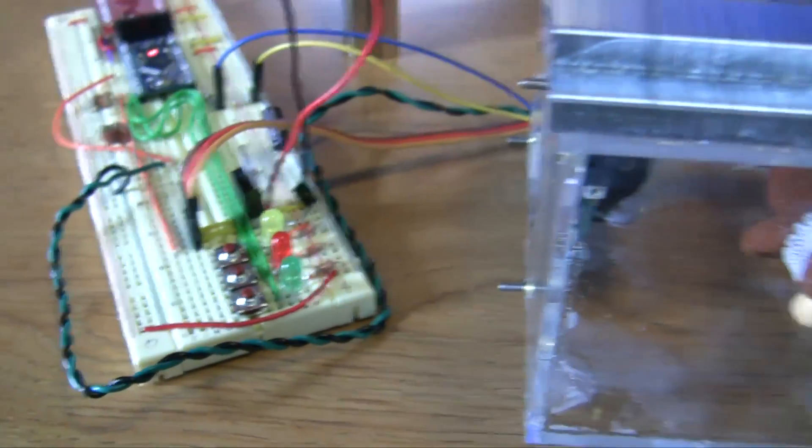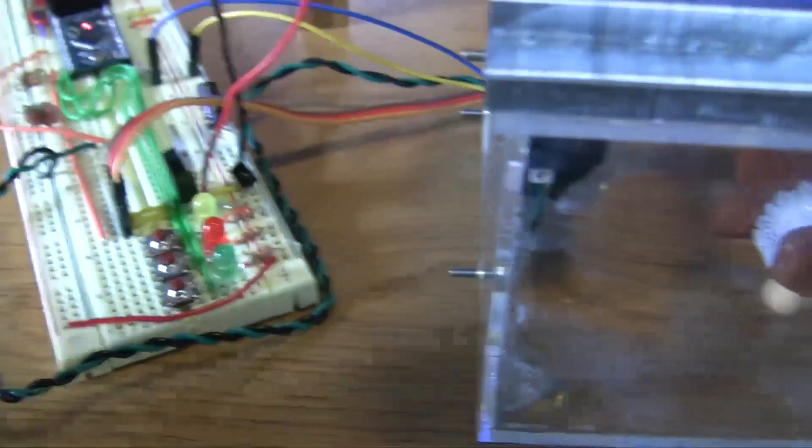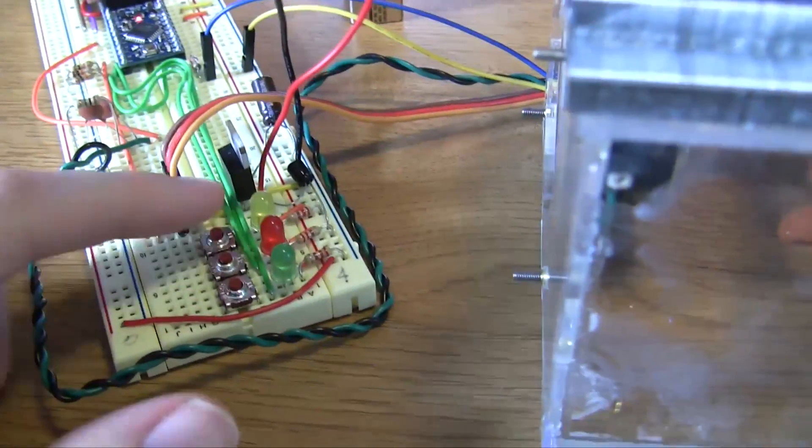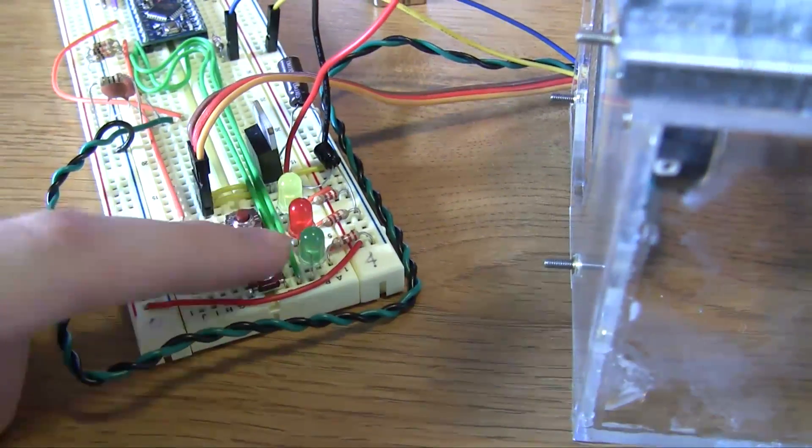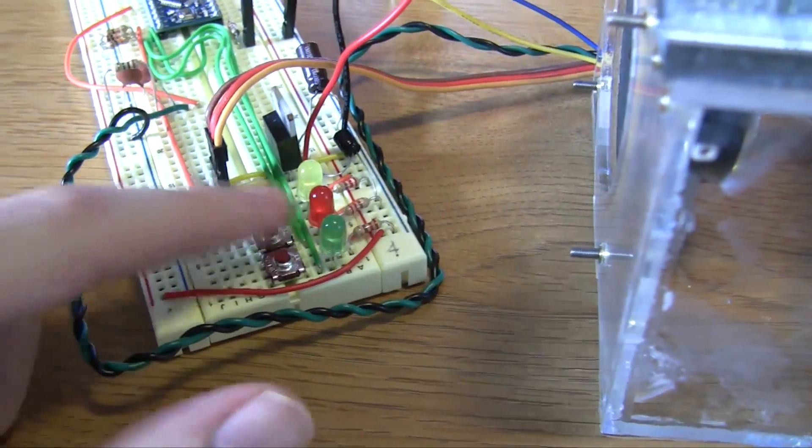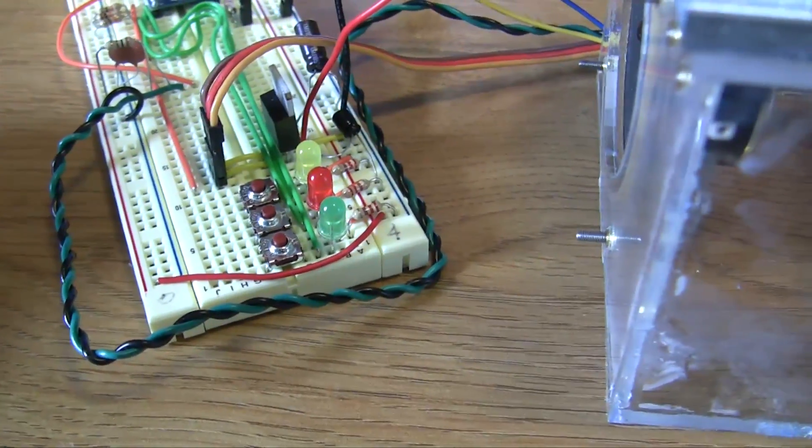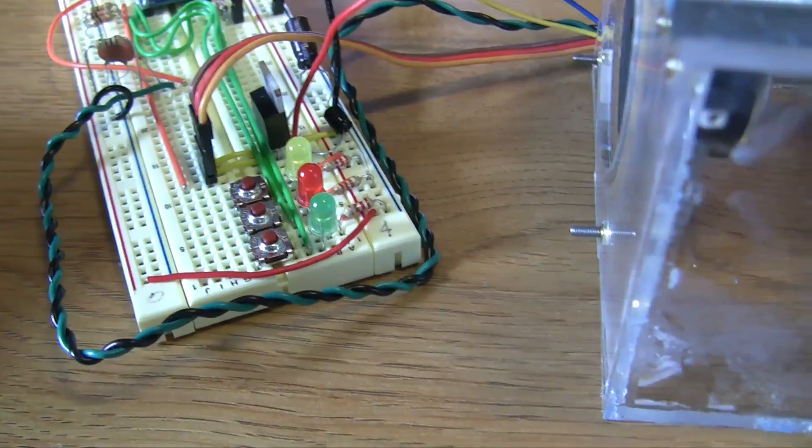All right, so I'll show you how the box works. Basically the way it's set up is you have to enter a six input code on these three buttons. So some combination of six key presses. And if you enter the right code, it plays a song and opens up for you. And if you enter the wrong code, it gets mad at you.